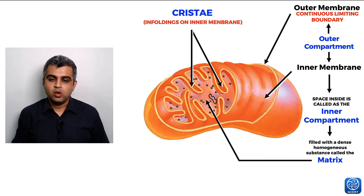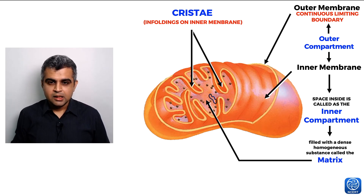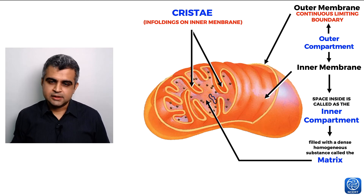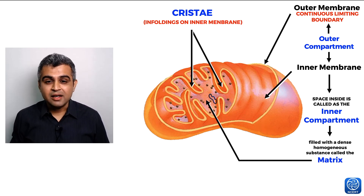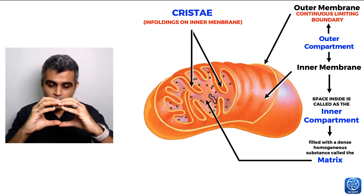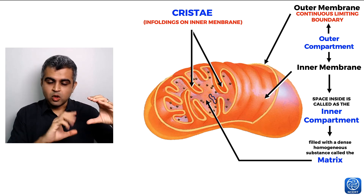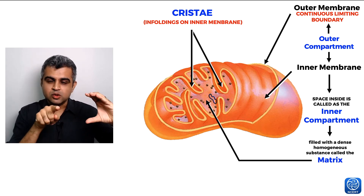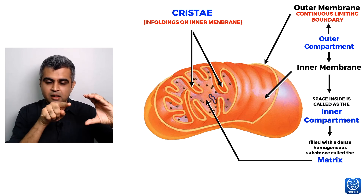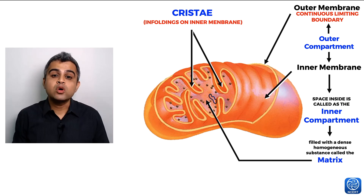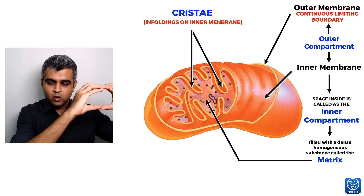The cristae are infoldings, and as we just learned, folding increases surface area for a given volume. So the mitochondria uses these cristae to increase its inner membrane surface area. If the inner membrane were smooth and continuous, there would be less surface area — but with multiple infoldings, there can be many times more surface area within the same volume.